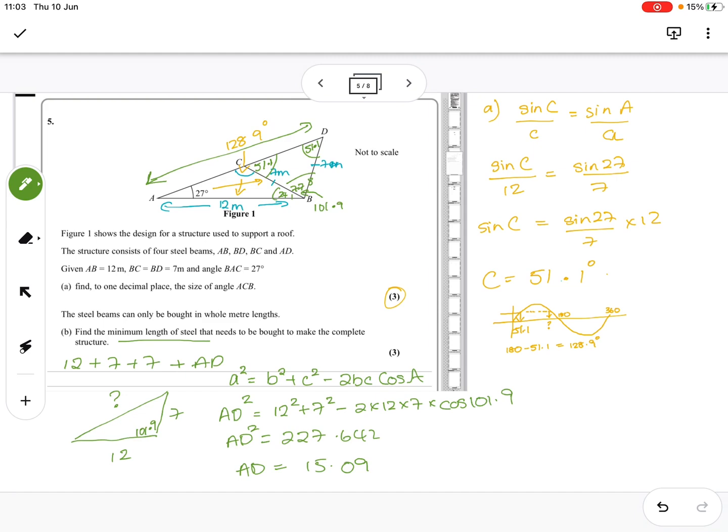Add that to the others. The final answer for B is 12 plus 7 plus 7 plus 15.09 gives me 41.09. Cos they've got to buy only bought in whole metres, we've got to buy 52 metres. That's it.